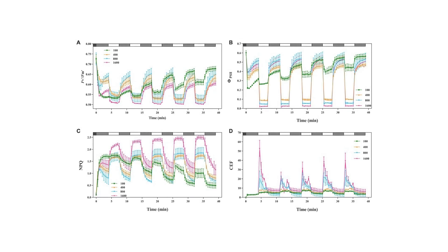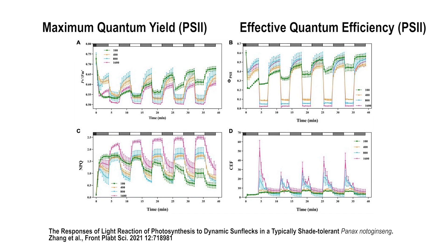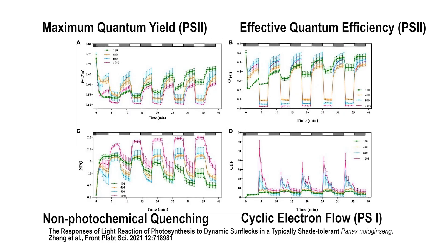Measurements of simulated sunfleck responses in the shade-tolerant Chinese ginseng have demonstrated the immediate restoration of low-light acclimation. These responses include maximum quantum yield as well as effective quantum efficiency pertaining to photosystem II, cyclic electron flow around photosystem I, and non-photochemical quenching.